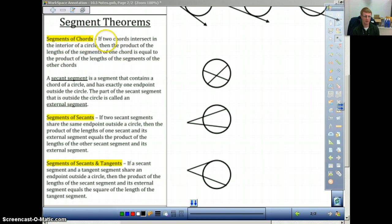So segment of chords. It says if two chords intersect in the interior of a circle, that's this picture right here, two chords intersecting, then the product of the lengths of the segments of one chord is equal to the product of the lengths of the segments of the other chord. What does that mean? Let me draw you a picture here. So we're going to label this A, B, C, D, and E.